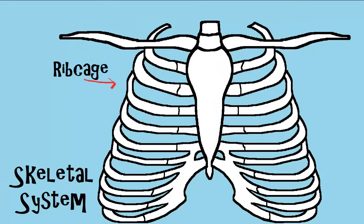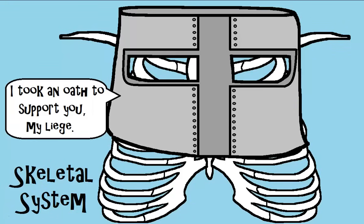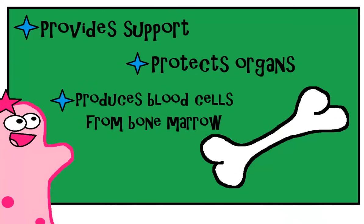Number eleven, the skeletal system. Bones. Adults have 206 bones. You actually had more at birth, but some of the bones fused together. And these bones support you. They protect your organs. Think ribcage. And they even produce blood cells from the bone marrow that is inside the bone. If you've ever heard of bone marrow donations, that's one reason why it's such an important thing.